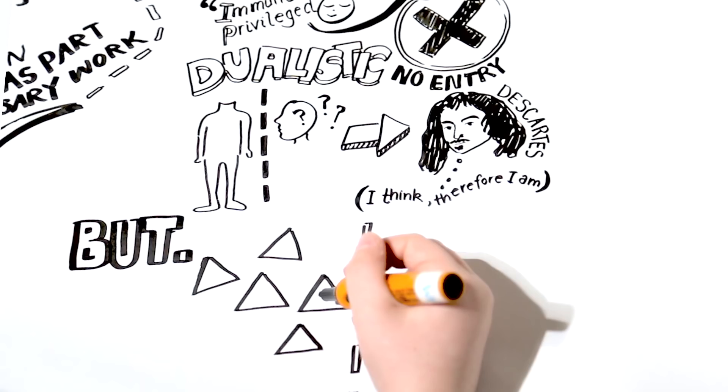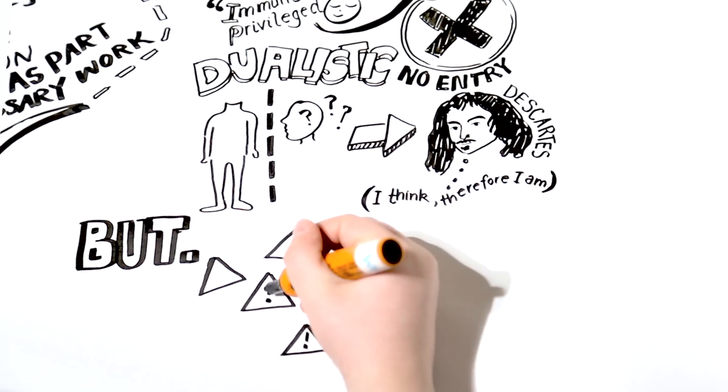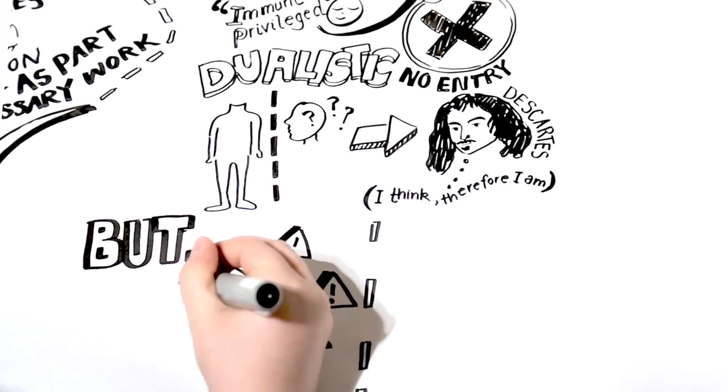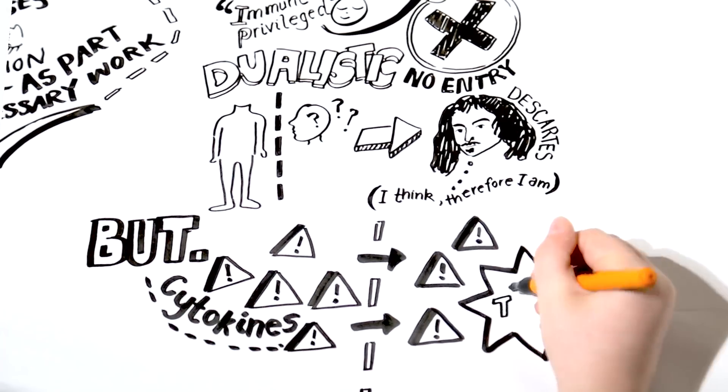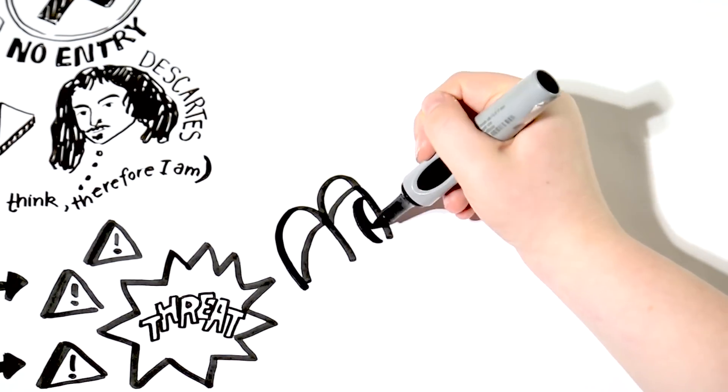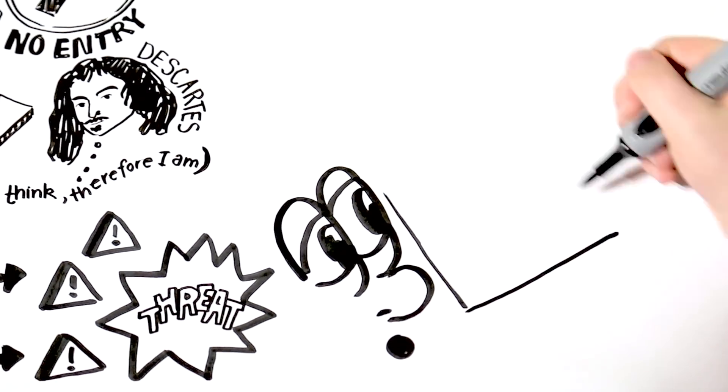But we now know that inflammatory proteins in the blood can get through the blood-brain barrier. These are called cytokines, and they are part of the immune system's response to threat. Let's take a look at the process of inflammatory response in more detail.